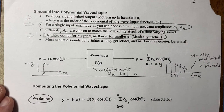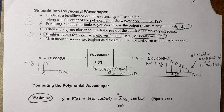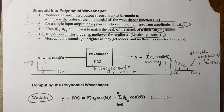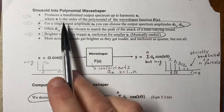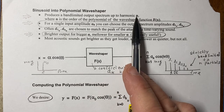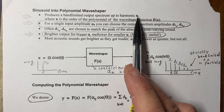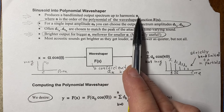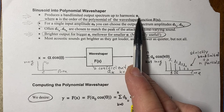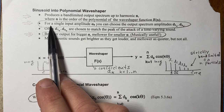A sinusoid input into a polynomial wave shaper produces a band-limited output up to harmonic n, where n is the order of the polynomial. This is very nice for musical synthesis — normally wave shaping has aliasing problems, but this doesn't, because if you use a polynomial wave shaper with sinusoidal input, you know from the math that it's band-limited to harmonic n, for a single input amplitude alpha-naught.